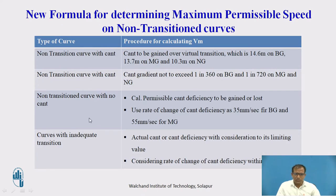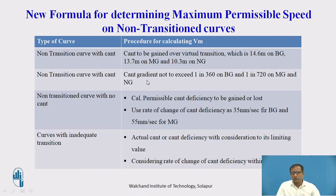For non-transition curves with cant, a virtual transition is provided — 14.6 m on broad gauge, 13.7 m on meter gauge, and 10.3 m on narrow gauge. The safe speed is calculated considering that the cant gradient should not exceed 1 in 360 on broad gauge and 1 in 720 on meter gauge and narrow gauge. For non-transition curves with no cant, the permissible rate of change of cant deficiency is 35 mm per second on broad gauge and 55 mm per second on meter gauge.